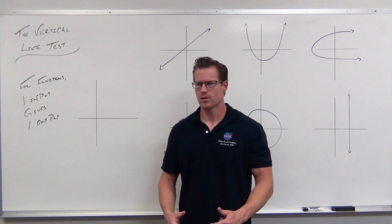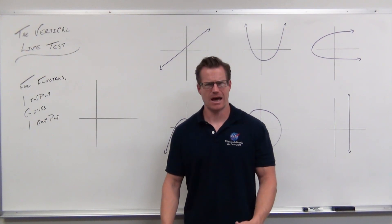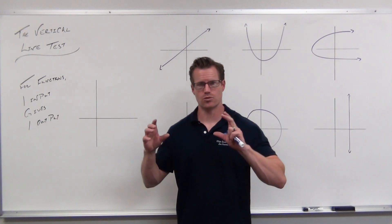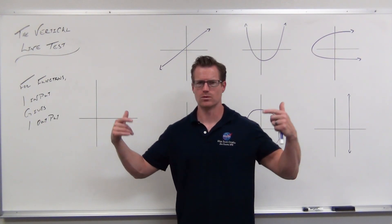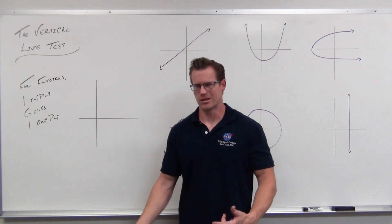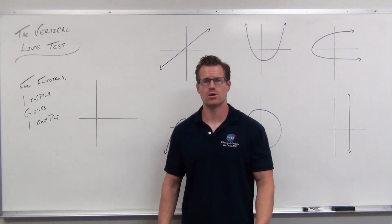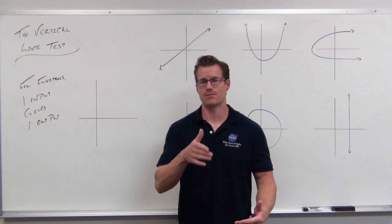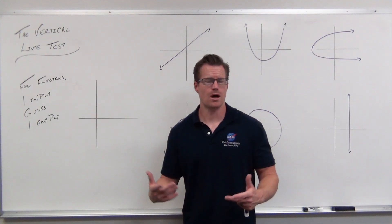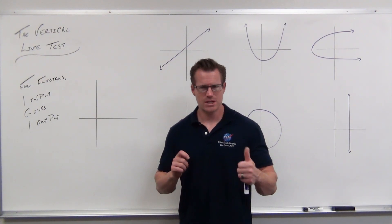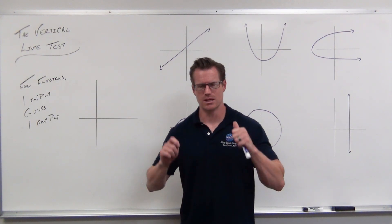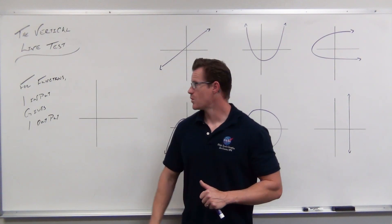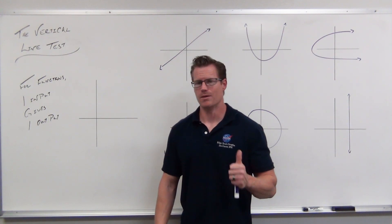So what is the vertical line test, why does it work, and how do you do it? The vertical line test is a way that we check whether the graph of some sort of mathematical expression or equation is a function or not. So when we look at a graph, we should be able to determine immediately whether it's a function or not. For functions, one input gives you one output. That's it.